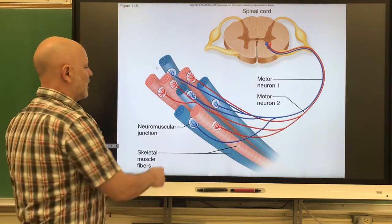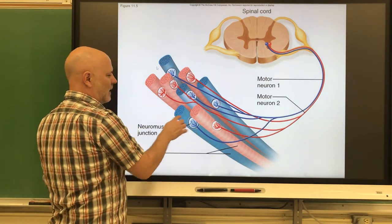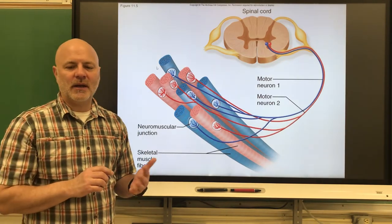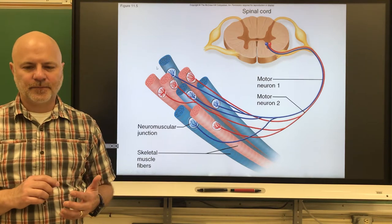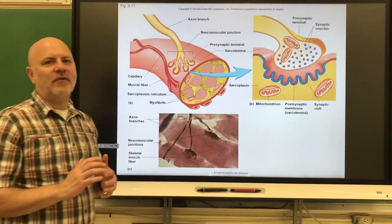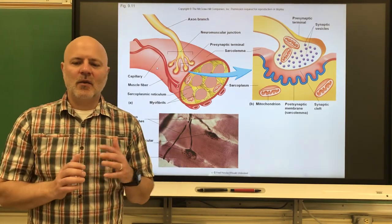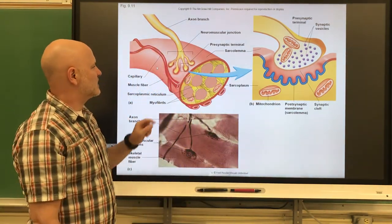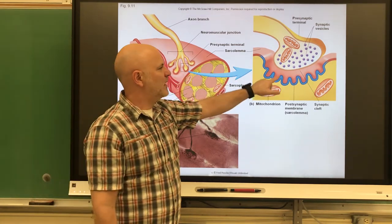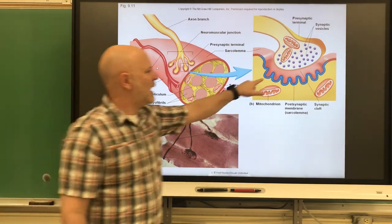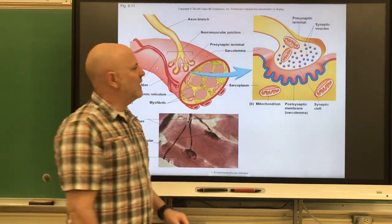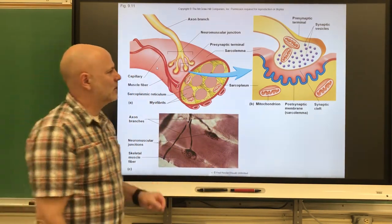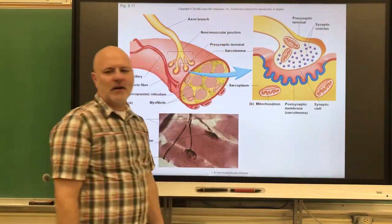The area where the axon makes contact with the muscle cell is known as the neuromuscular junction — a region where a motor neuron comes into contact with a skeletal muscle cell. Just like when we went from neuron to neuron, the axon is not directly connected to the muscle cell. There is a small space known as the synaptic cleft. The motor end plate is a trough-like part of the muscle fiber sarcolemma that dips down a little in that area.